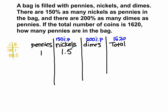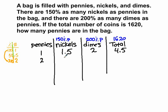There would be 200% the number of dimes as pennies. So if 100% would be 1, then 200% would be 2. In this scenario there would be 1, 1.5, 2 — giving a total of 4.5. If you're not comfortable working with a decimal, you could double everything: make pennies 2, nickels 3, and dimes 4. So our ratio is 1 to 1.5 to 2, or equivalently 2 to 3 to 4.